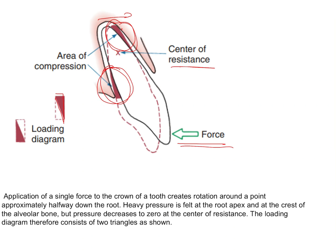Since very heavy pressures are going to be felt on these two points, it is suggested to keep the tipping forces to a minimum. Tipping is anyway the simplest type of tooth movement — applying any single force on the crown will bring about tipping. Since these areas must withstand maximum forces, it is advised to keep the tipping forces under 50 grams. This is important and could be asked in the examination.